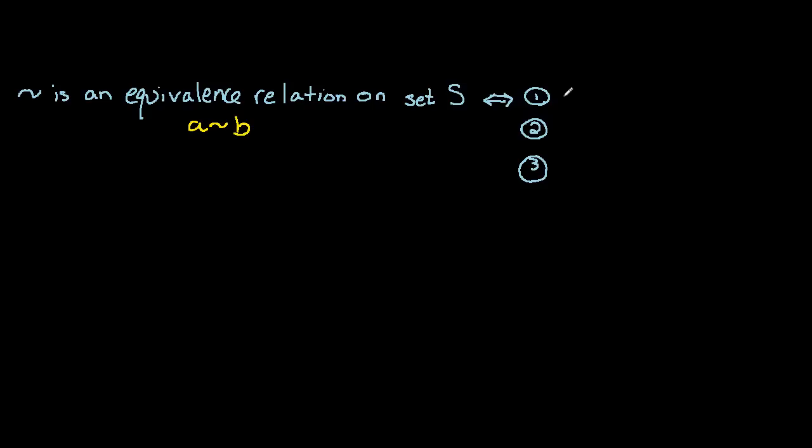So the first condition is that twiddle is reflexive, and by this we mean A twiddles itself. The second condition is that twiddle is symmetric, and by this we mean A twiddles B implies B twiddles A.